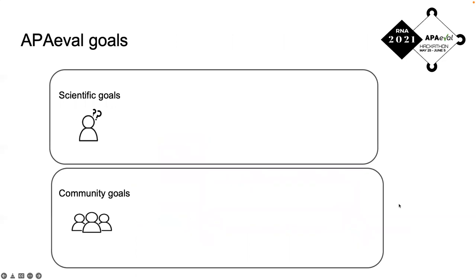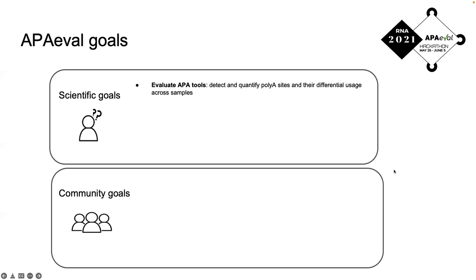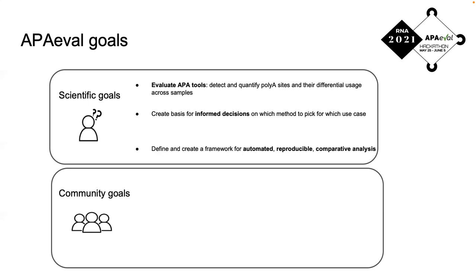To tackle this question, we came together as a community to kick-start the APAVal project, which started off as a hackathon in 2021. We divided our goals into scientific and community. For scientific goals, we first would like to evaluate APA tools to detect and quantify polyadenylation sites and their differential usage across samples. We would also like to create a basis for informed decisions on which method to pick for which use case, and define a highly automated, reproducible benchmarking framework where we can easily plug and play different data sets.